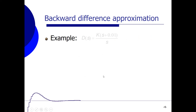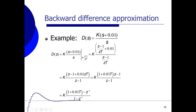Let's see how it works out in an example. We have a PI controller with k the proportional part and an integrating part. We're going to transform this controller to the Z domain by using the backwards difference approximation, substituting (z − 1)/(z · T) instead of s. When we substitute s, we get the discrete controller equal to k times (z − 1)/(z · T) plus 0.01 divided by (z − 1)/(z · T).